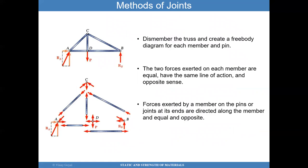In the method of joints — a method to determine the loads acting at each of the truss members — the idea is to dismember the truss and create a free-body diagram for each member and pin. The two forces exerted on each member are equal, have the same line of action, and opposite sense. Forces exerted by a member on the pins or joints at its ends are directed along the member, equal and opposite. As you can see here, each bar has a load acting aligned along the member.